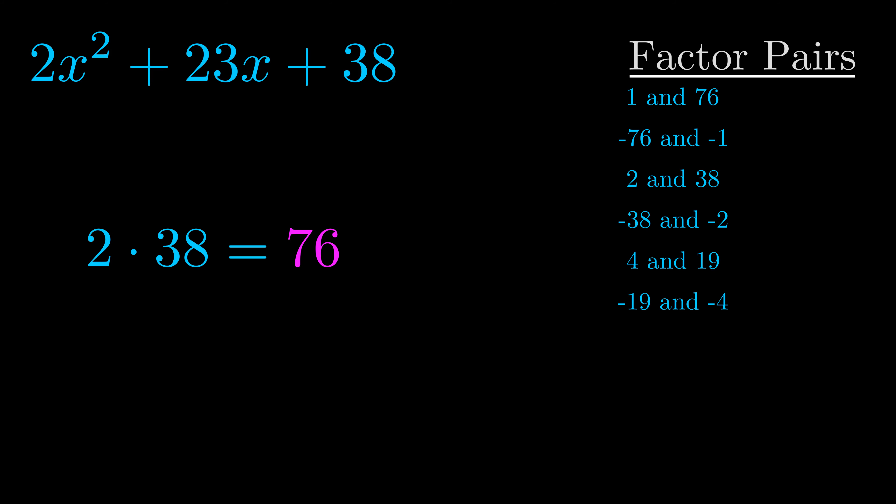Now once you have these factor pairs, the goal is to find which of these pairs adds to the b value. The b value is the coefficient on the x term.